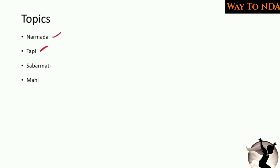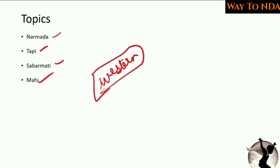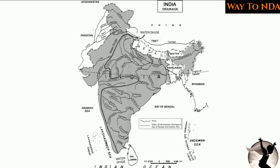The four important western flowing rivers we are going to study are Narmada, Tapi, Sabarmati, and Mahi. On the map, the black line is the water divide between the eastern flowing rivers and the western flowing rivers.